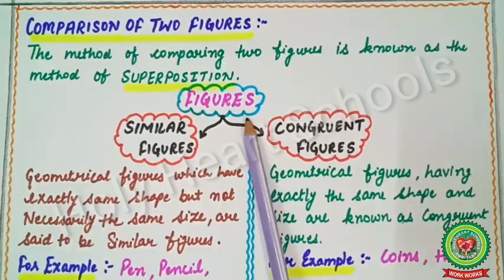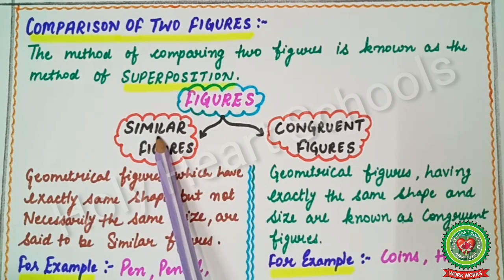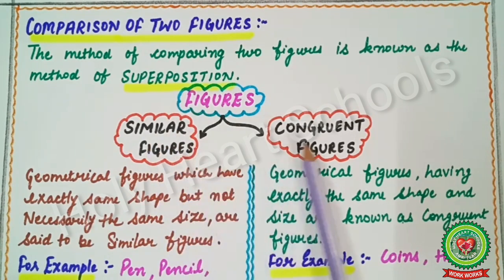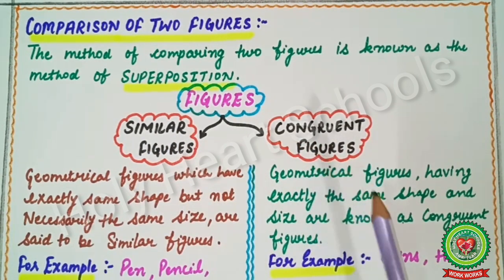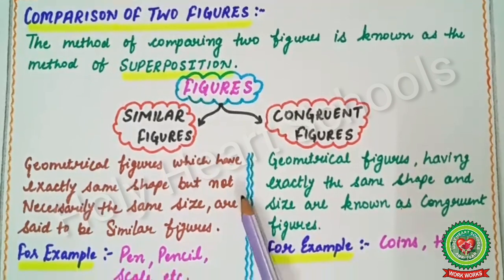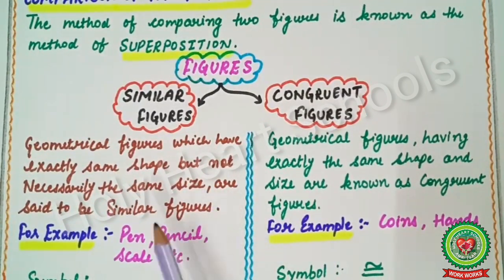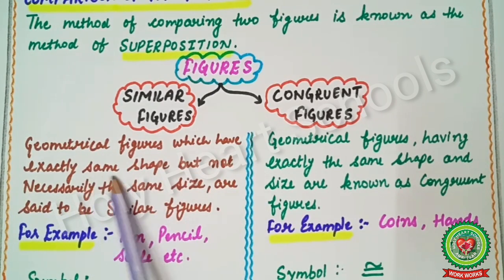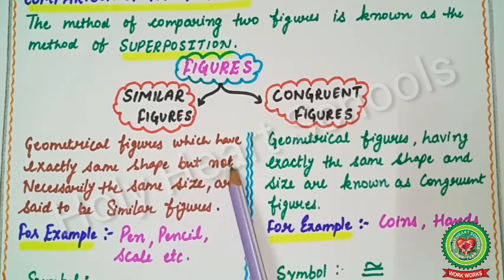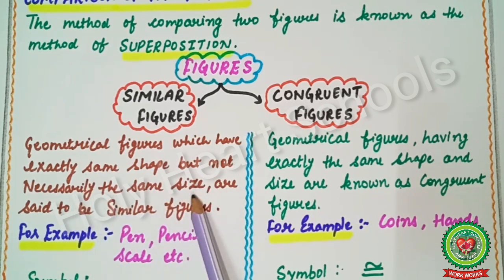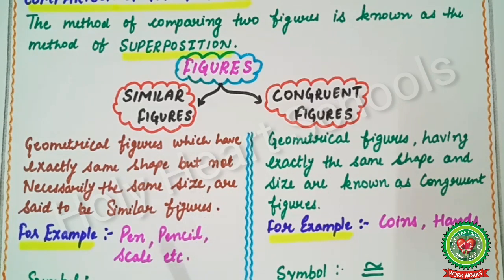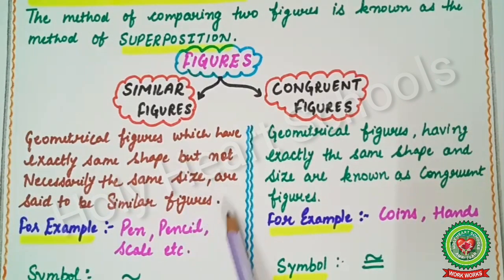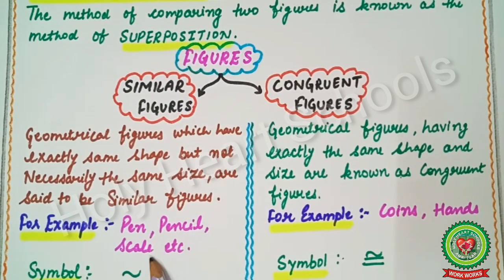We have two types of figures: first, similar figures, and second, congruent figures. We will study them one by one. Geometrical figures which have exactly the same shape but not necessarily the same size are said to be similar figures. Examples of similar figures include pens, pencils, and scales.